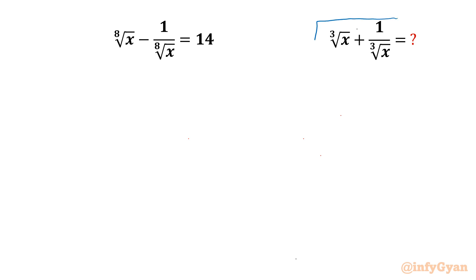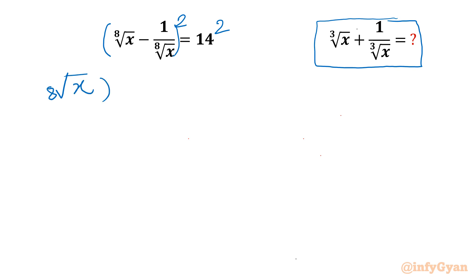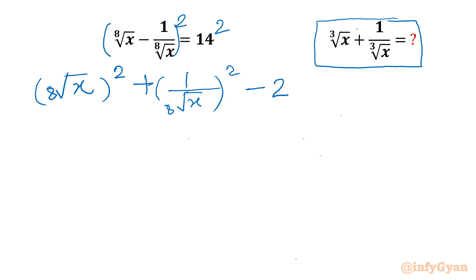Let's get started by squaring both sides of the given equation. Applying the formula (a minus b) whole square: 8th root of x whole square plus 1 over 8th root of x whole square minus 2ab. The product of the two terms is 1, so we get minus 2 on the left. The right hand side is 14 squared which is 196. Now adding 2 to both sides, and 8th root of x whole square becomes 4th root of x.